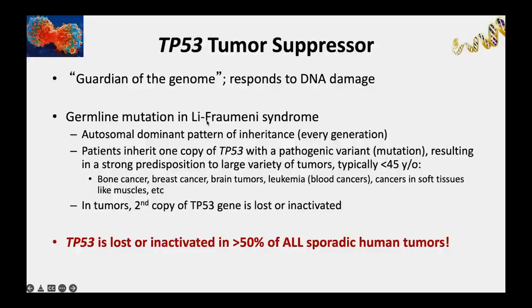TP53 is also involved in a cancer predisposition syndrome called Li-Fraumeni syndrome. In this case, there's a germline mutation of TP53 that is inherited from one generation to the next. Patients inherit one pathogenic variant in that gene, which gives them a very strong predisposition to many different cancers. These individuals develop cancers at a younger age, typically younger than 45, and are prone to bone cancers, breast cancers, brain tumors, leukemias, and cancers of soft tissue like muscles.